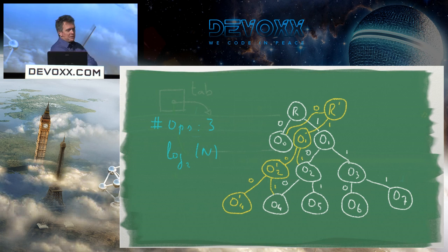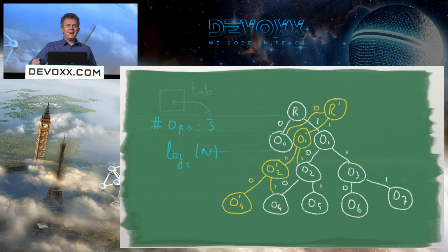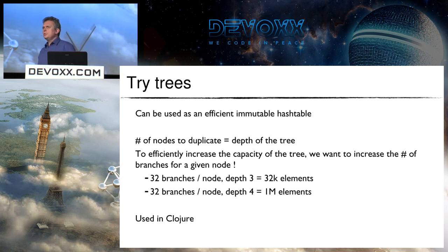How many operations do I need to duplicate such a tree? Only the depth of the tree, which is log₂(n), where n is the number of nodes and 2 is the branching factor. To increase capacity without increasing depth, I want to increase the number of children per node — because depth determines how long it takes to find an element.